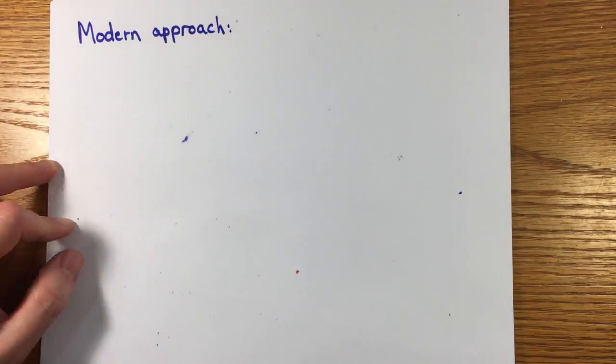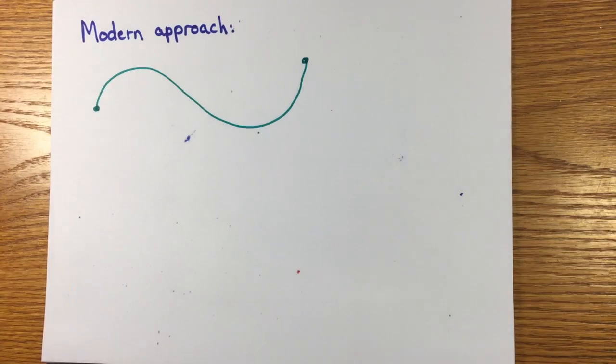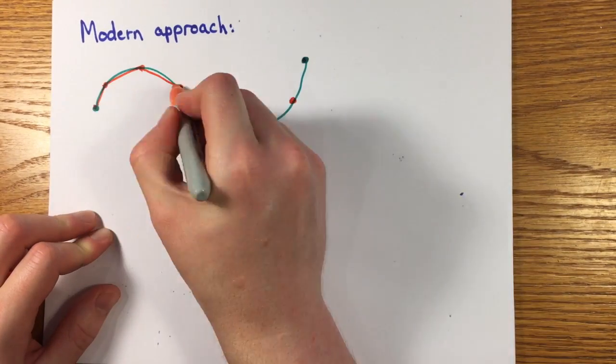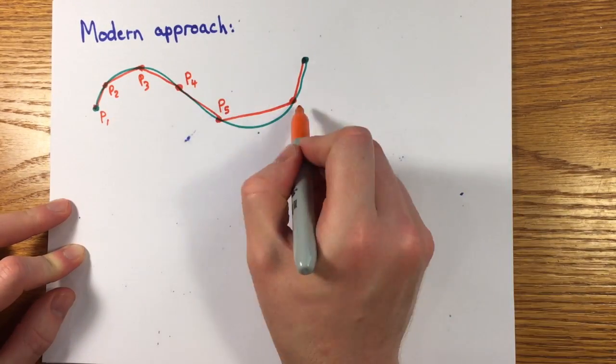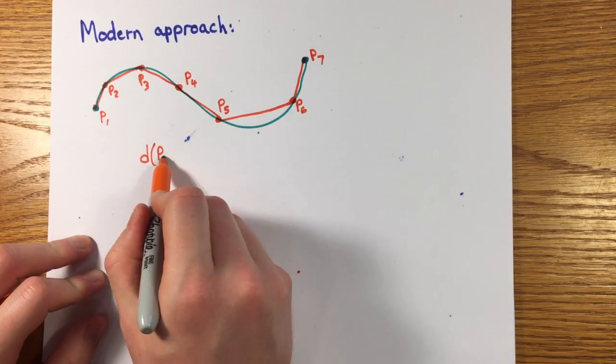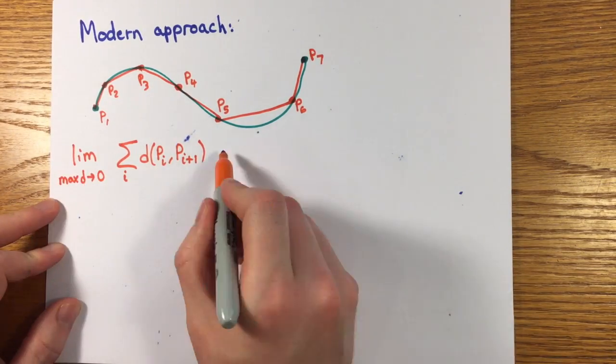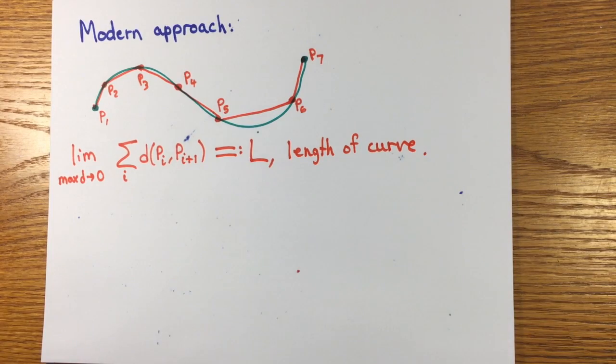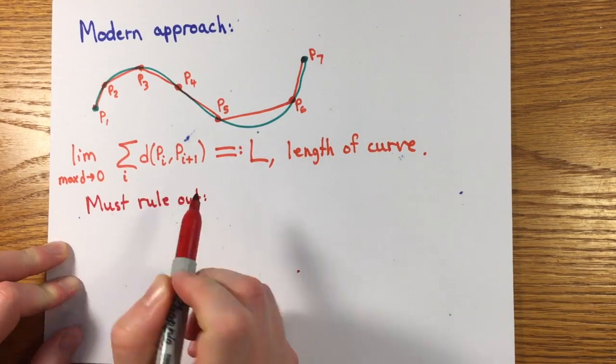The way we extend the notion of length to curve lines today is to look at all the ways to select points along the curve, connect them with segments, sum the lengths of those segments, and take the limit of such sums as the largest segment goes to zero. If this limit exists, we declare it to be the length of the curve.